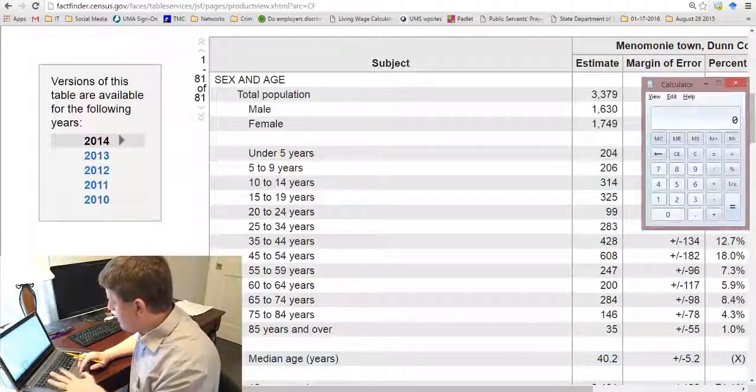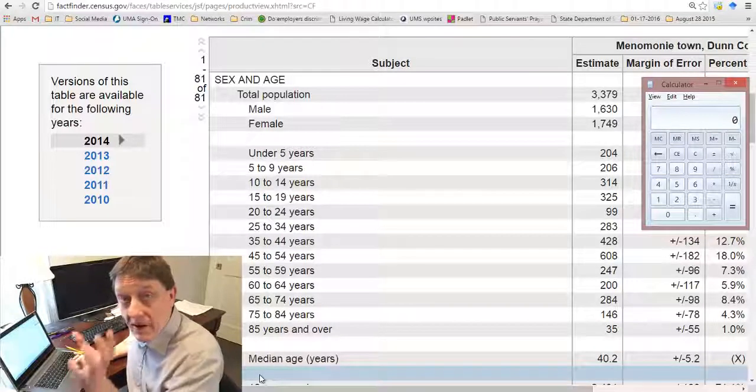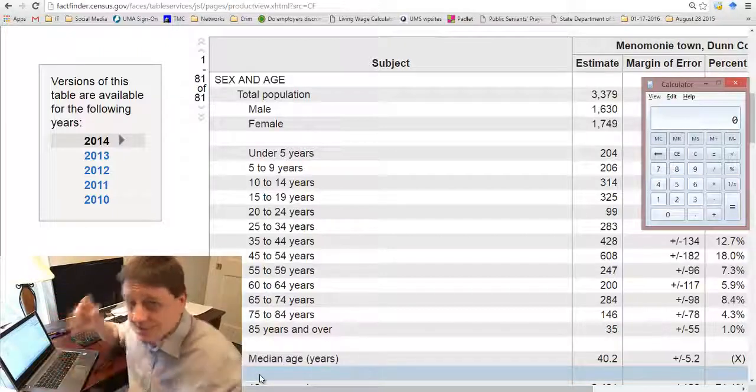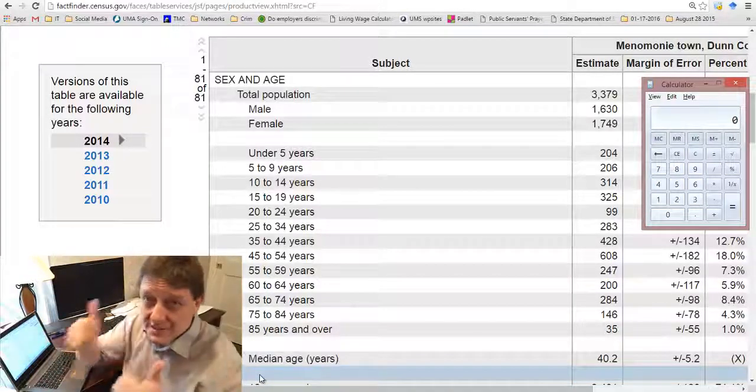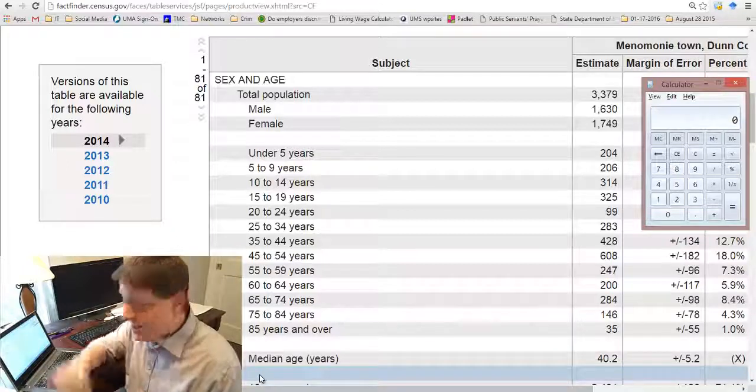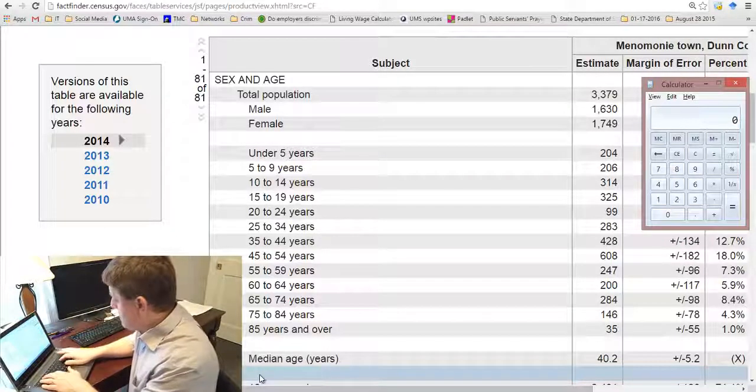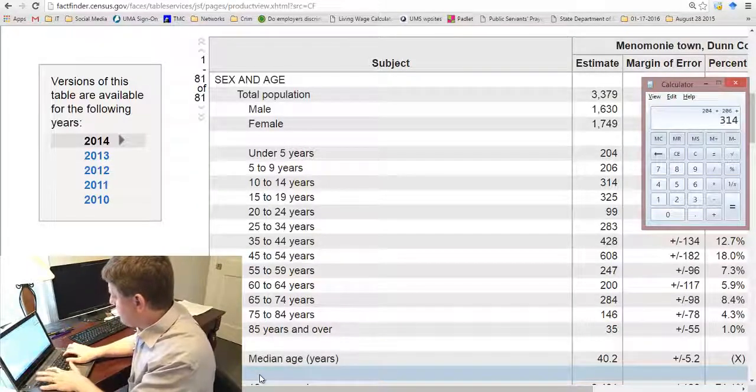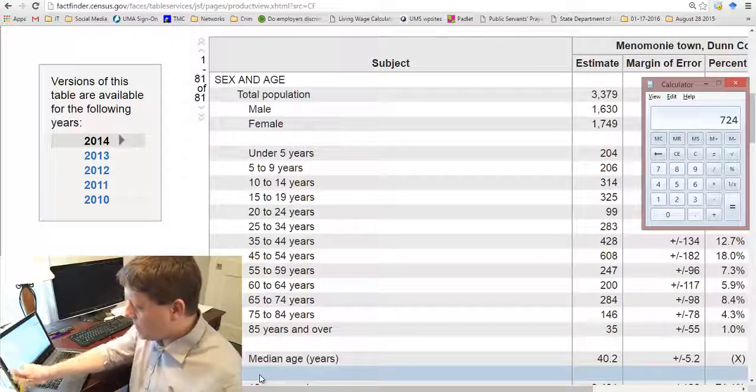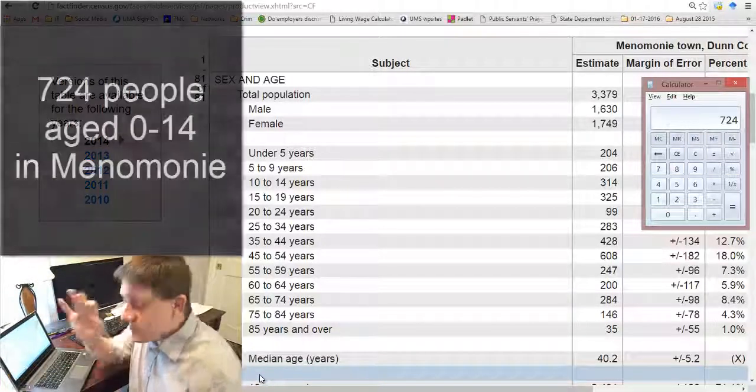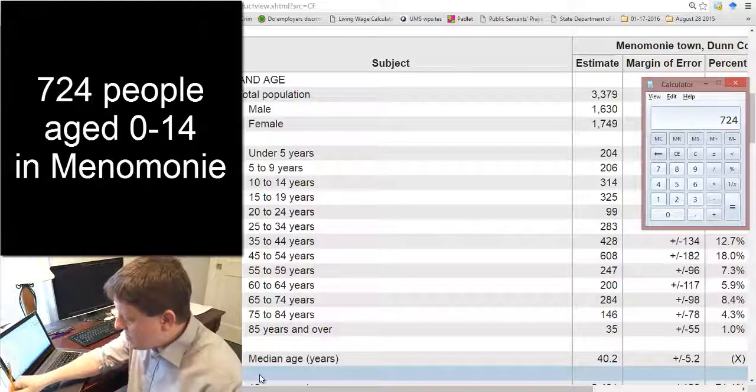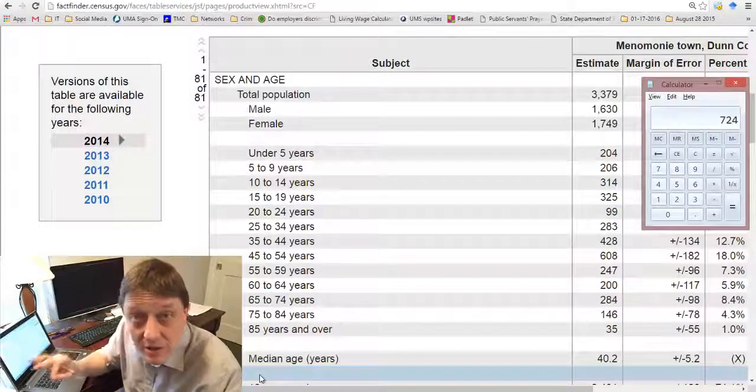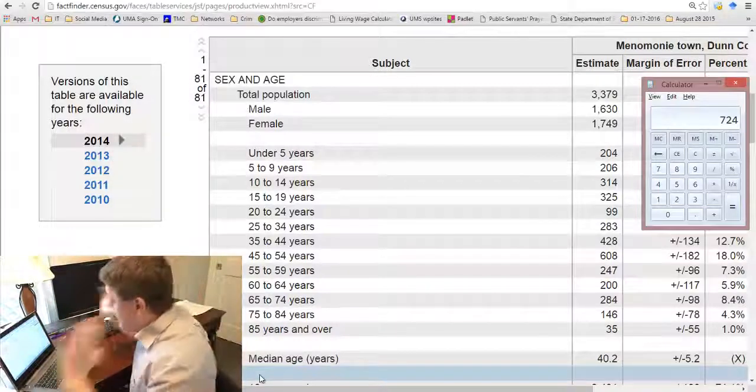I'm going to do that using my computer's calculator function. You may want to use a handheld calculator, and that's fine. You may want to use pencil and paper if you can add by hand. That's great. Any way you choose, that's fine. But what I'm going to want you to do first is to write down 204, if you're studying Menominee, plus 206 plus 314, and we'll come up with the number 724. So there are 724 individuals aged 0 to 14 in Menominee in the year 2014, according to the American Community Survey. Excellent.